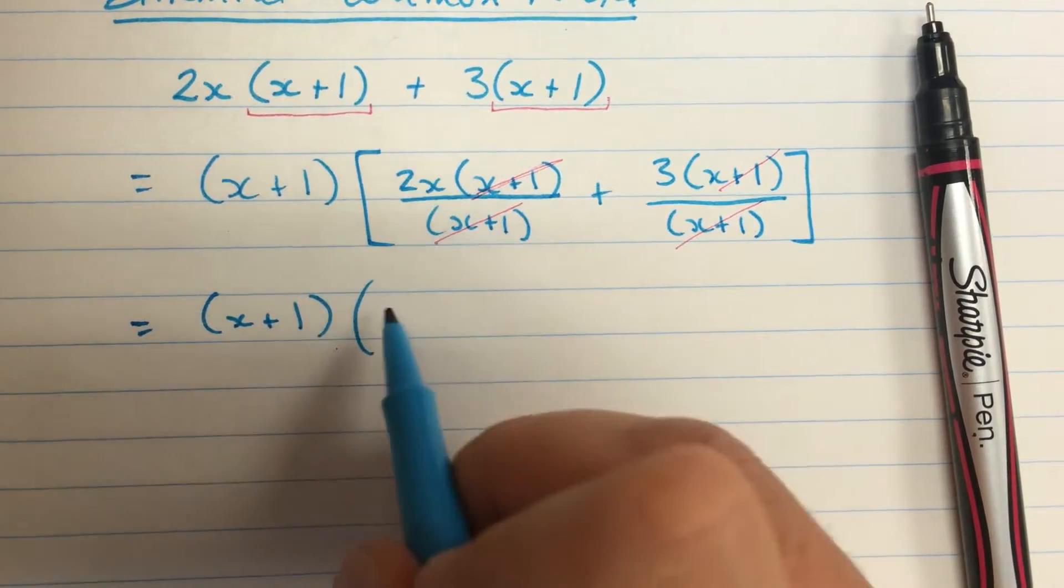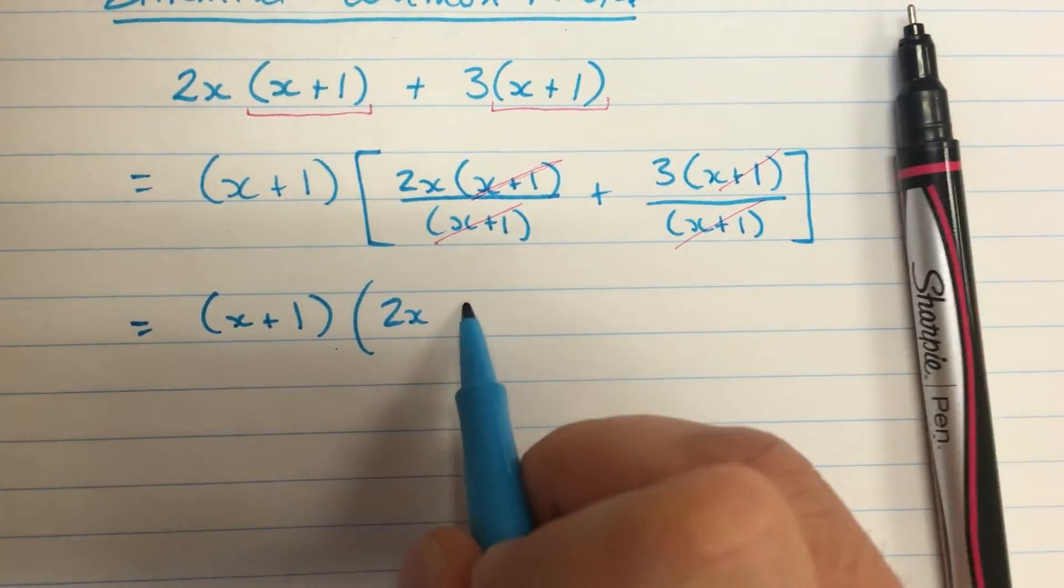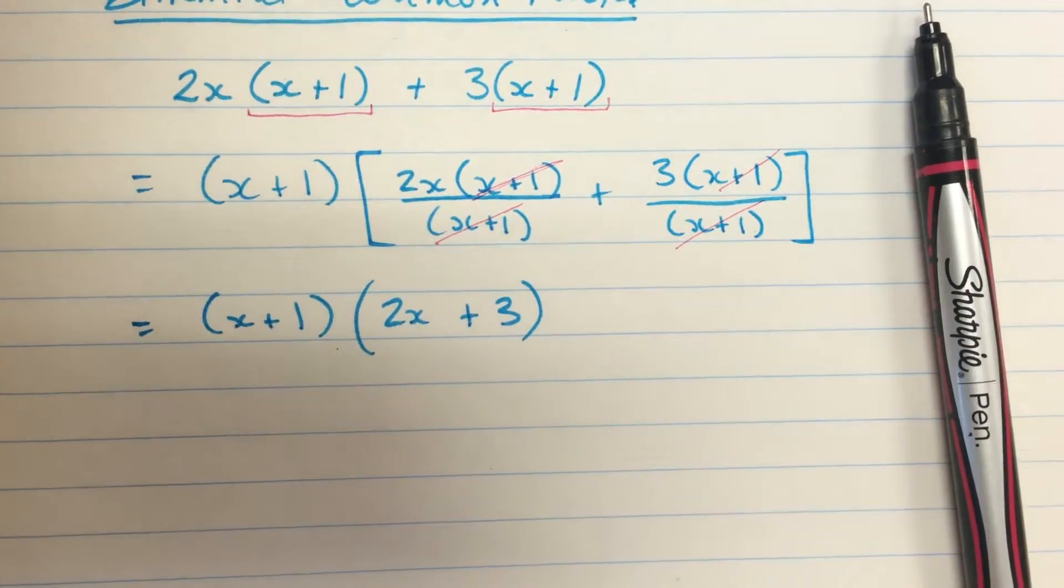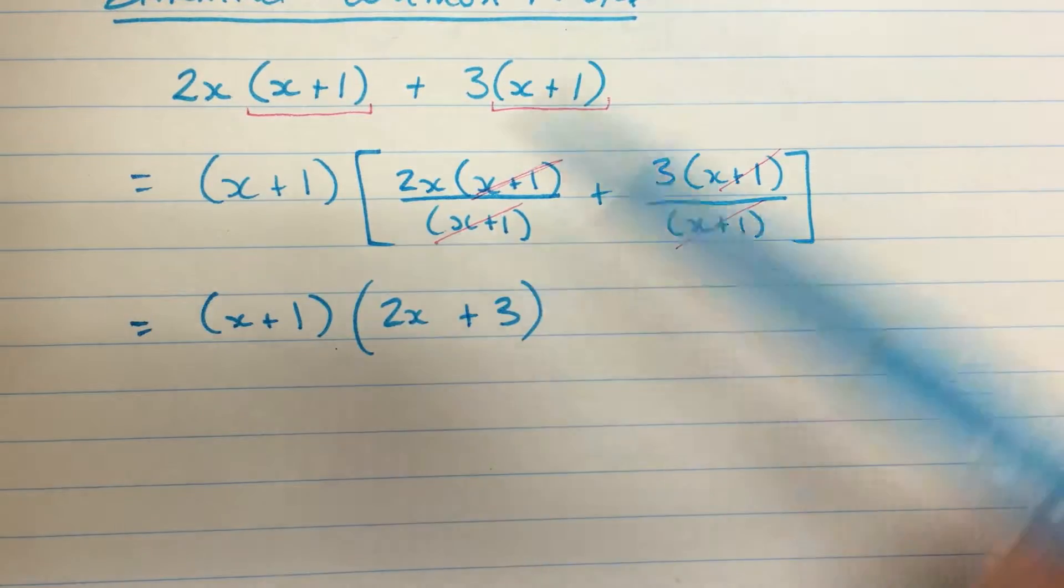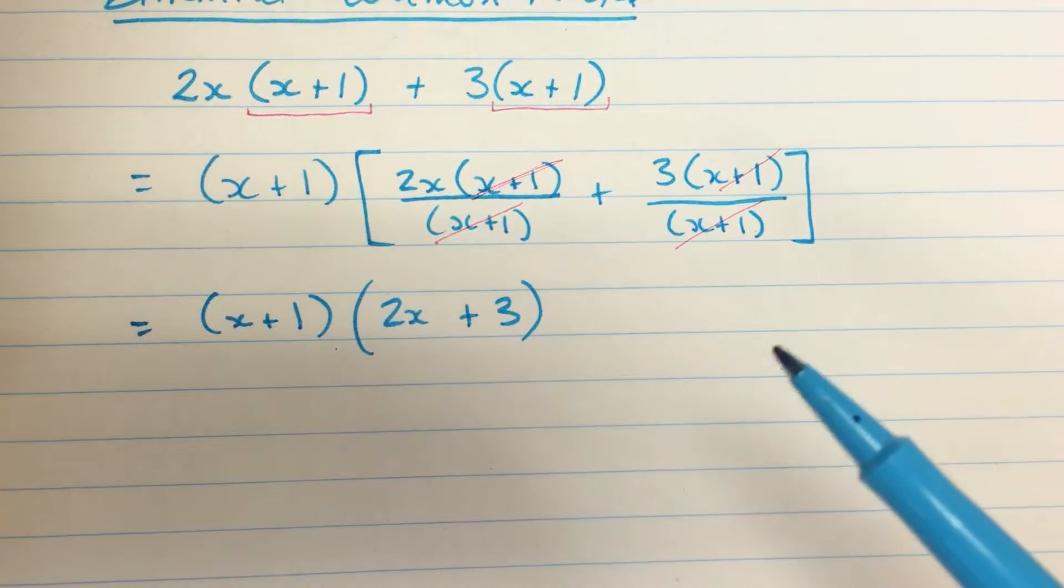And so together we get x plus 1 out here. And then inside of this what's left here we have a 2x. And here we have 3 and it's positive. And so we have now factored that original expression into a product of 2 binomials.